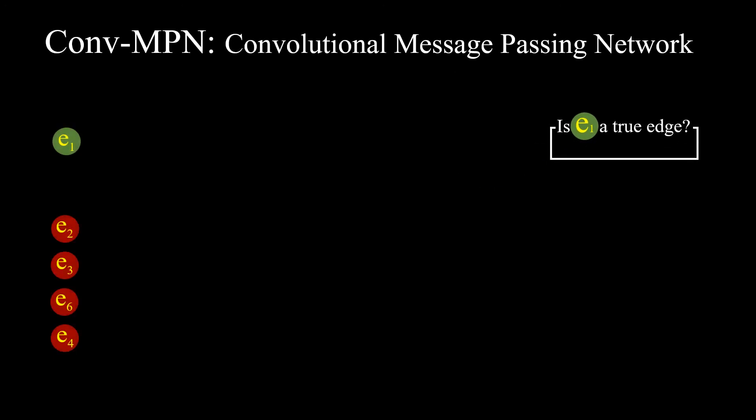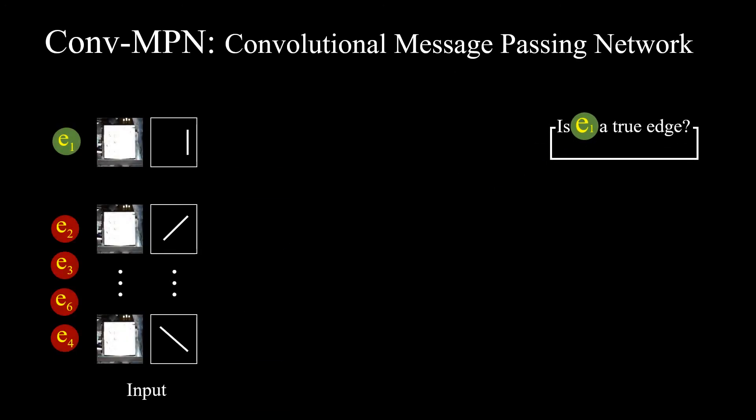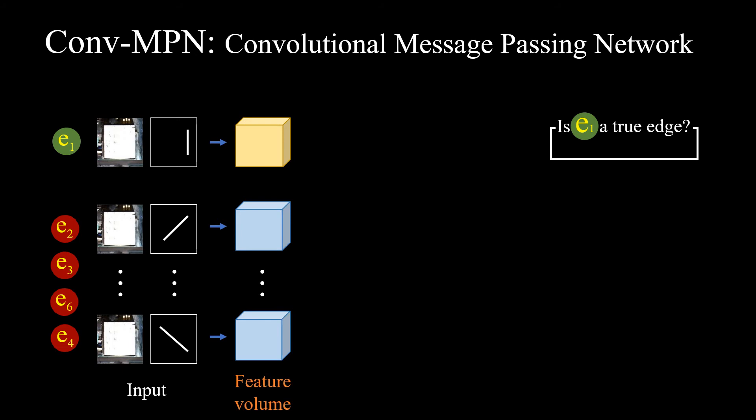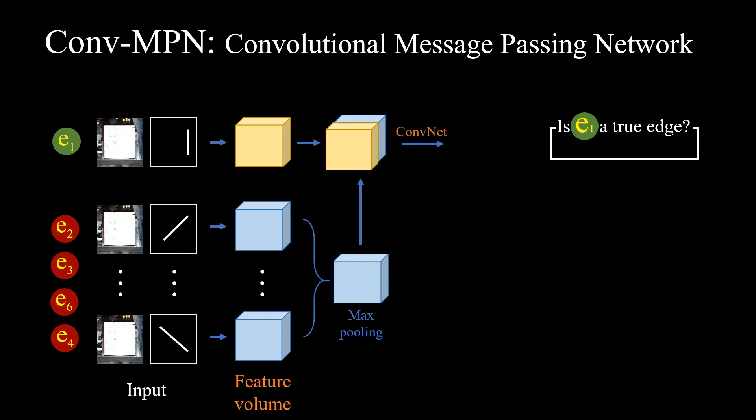Different from standard message passing or graph neural networks, ConvNPN encodes a node into a 3D feature volume instead of a 1D vector, then uses a ConvNet instead of multilayer perceptron to encode a message and update a node feature.